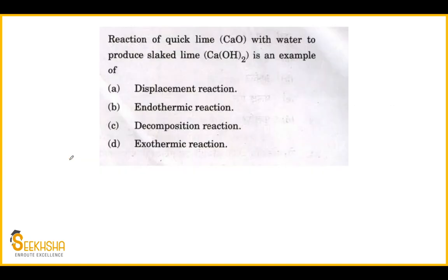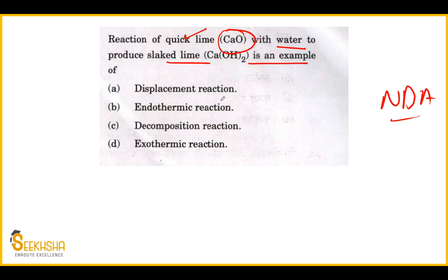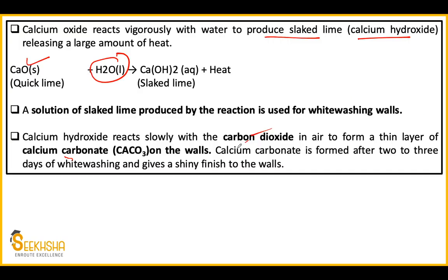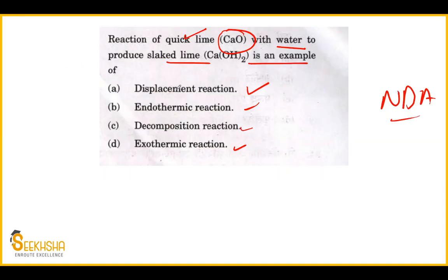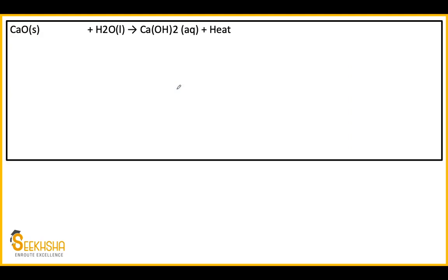Now let's see the NDA paper question on the same topic. The reaction of quick lime (CaO) with water — what type of reaction is this? Options: A. displacement reaction, B. endothermic reaction, C. combination reaction, D. exothermic reaction. The equation: CaO + H2O → Ca(OH)2 and heat is produced. So the answer is exothermic reaction.